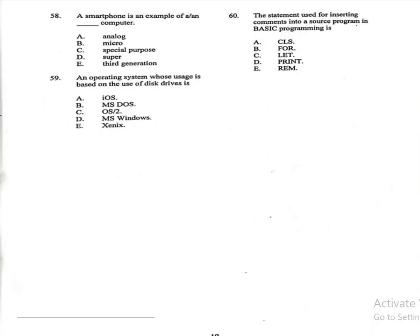Question 58: A smartphone is an example of a — computer. A: analog, B: micro, C: special purpose, D: super, E: third generation. The correct answer is B, micro. A smartphone is a type of microcomputer due to its size and functionality. Question 59: An operating system whose usage is based on the use of disk drives is — A: iOS, B: MS-DOS, C: OS/2, D: MS Windows, E: Zen OS. The correct answer is B, MS-DOS. MS-DOS — Microsoft Disk Operating System — operates based on disk storage.